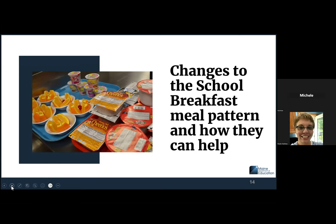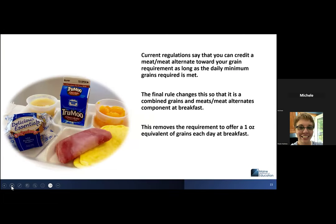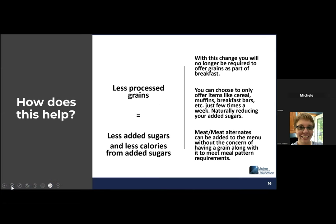Changes to the school breakfast meal pattern and how they can help you with reducing sugar limits. Current regulations say that you can credit a meat-meat alternate towards your grain requirement as long as the daily minimum grain requirement is met. The final rule changes this so that it is a combined grains and meat-meat alternate component at breakfast. This removes the requirement to offer a one ounce equivalent of grains each day at breakfast.